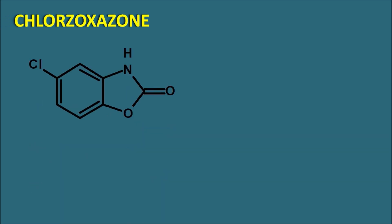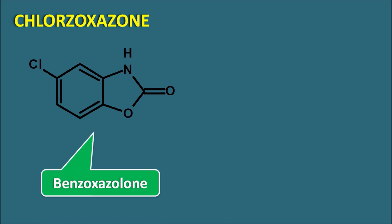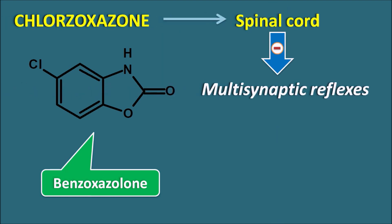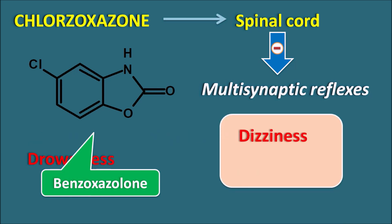Among these adjuvant drugs, chlorzoxazone is widely used. Its structure is a benzoxazole with a ketone group — benzoxazole is the ring system present in chlorzoxazone. This drug mainly acts on the spinal cord, inhibiting multi-synaptic reflexes and thereby relieving muscle spasm. It produces central side effects like dizziness and drowsiness. These drugs are not the main line of treatment; they are used as adjuvants to control pain and spasm in musculoskeletal disorders.